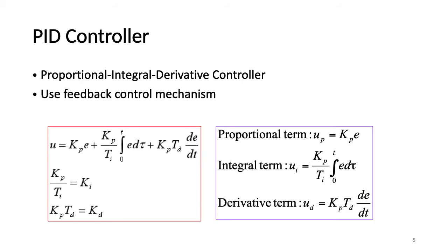The proportional term reacts faster to changes in control error E and goes to zero when there is no control error. The integral term calculates the control signal as the time integral of the control error from time zero to the present time, calculating continuously until the control error becomes zero. It is slow reacting at the beginning because of small error and needs time to give a significant effect on the control signal.